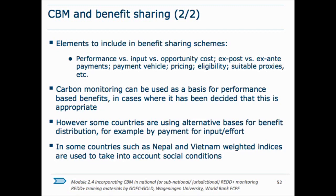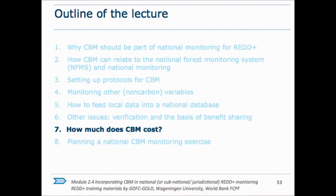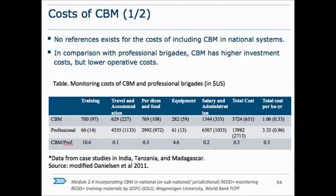Some communities with active sustainable forest management may already be generating information as part of normal practices, meaning inclusion into national systems could be relatively straightforward — though agreements on whether information is public or private will be needed. Setting up a CBM system generally requires higher initial training and equipment costs, but lower long-term operational costs. Communities already absorbing monitoring as part of normal management can also reduce overall national monitoring costs.